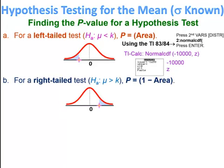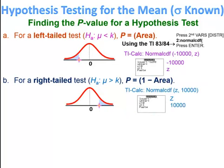For a right tail test — when the alternative hypothesis states the mean is greater than some value — the area is shaded to the right. The p-value equals 1 minus the area from the z-score. In the calculator, enter the z-value as the lower limit and 10,000 as the upper limit, then press enter to get the area to the right.